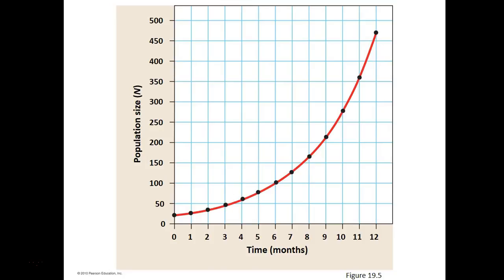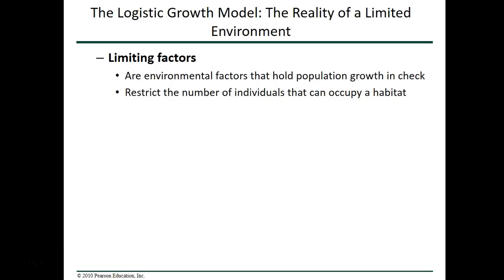But if the planet is a closed system with respect to nutrients, exponential growth cannot continue forever. There are limiting factors — environmental factors that hold population growth in check. It could be insufficient food, not enough nesting sites, or that once a certain number of individuals is reached, diseases spread rapidly and kill them faster. This is where we need a different model: the logistic growth model.